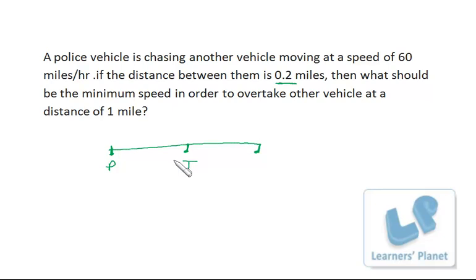The initial distance between them is 0.2 miles. If this complete distance is one mile, then from this point to this point it must be 0.8 miles, right?